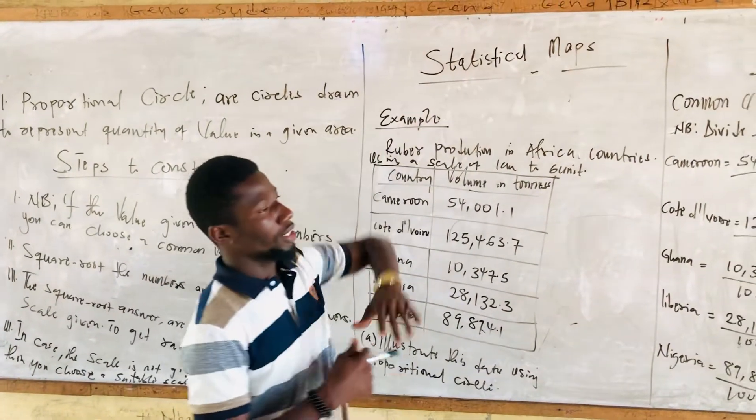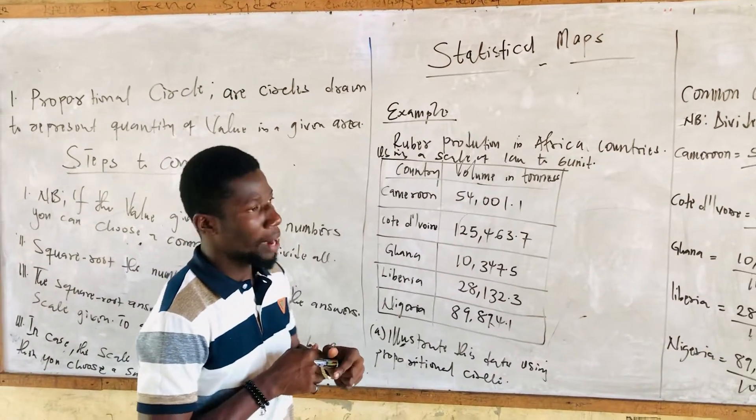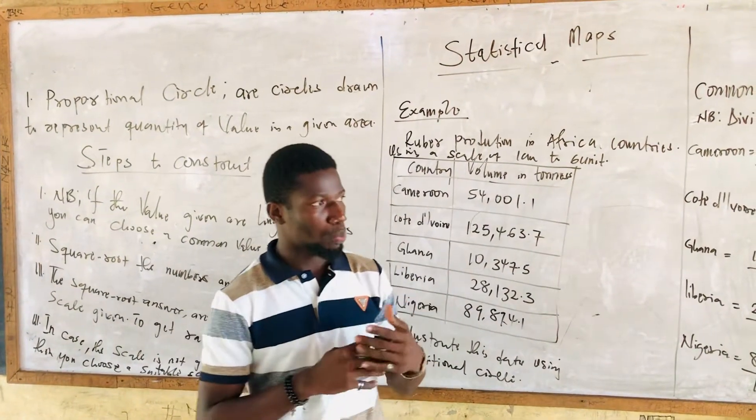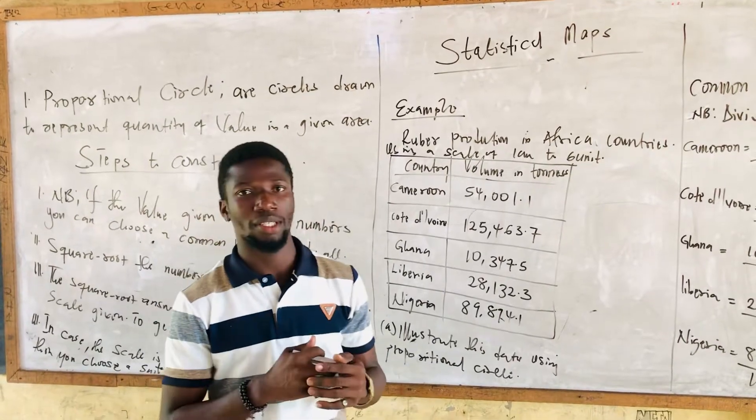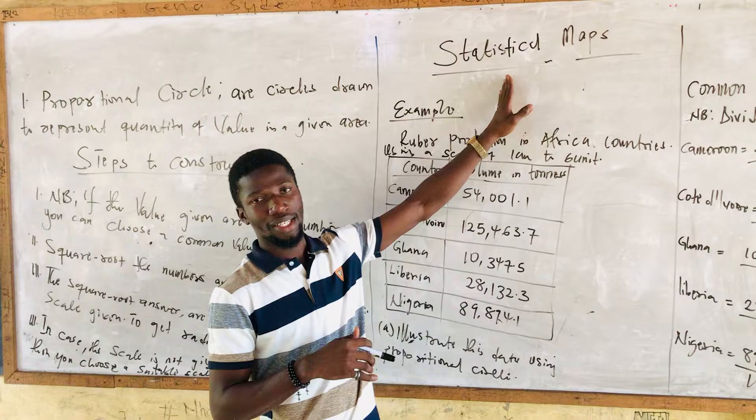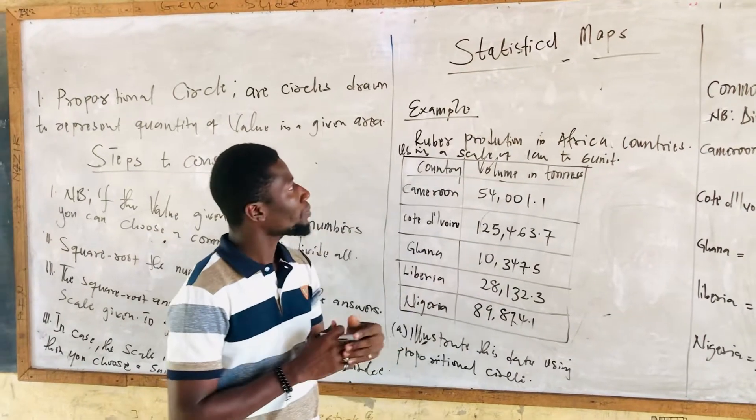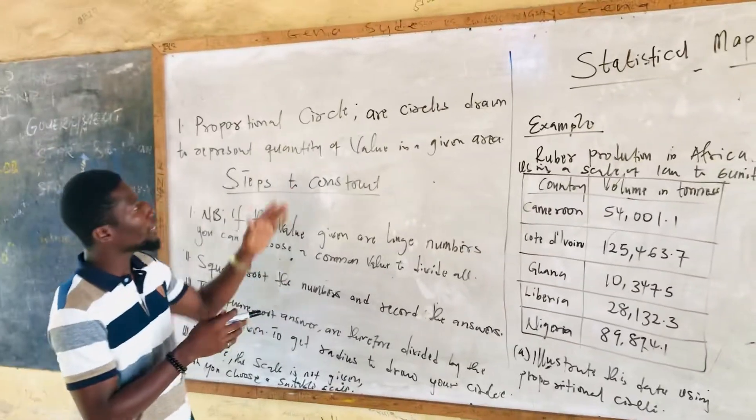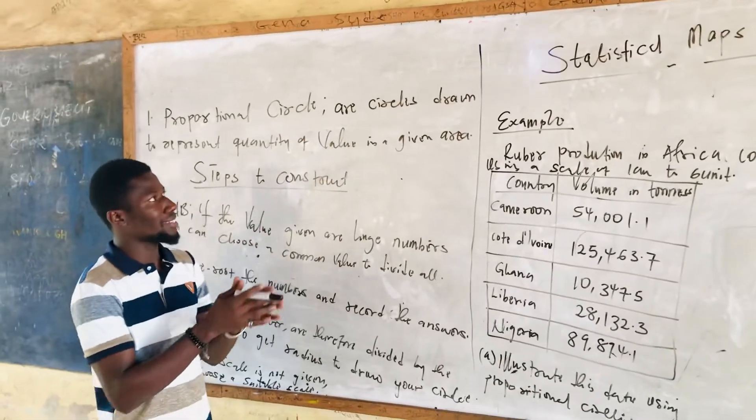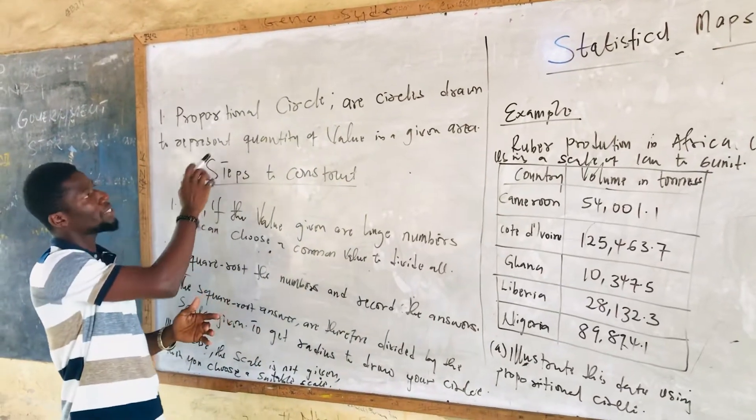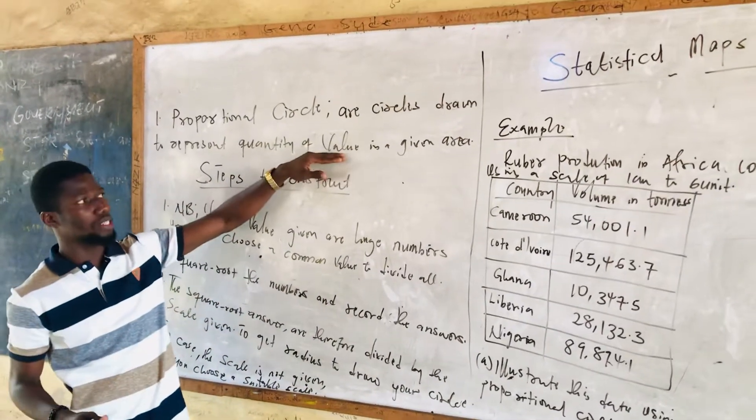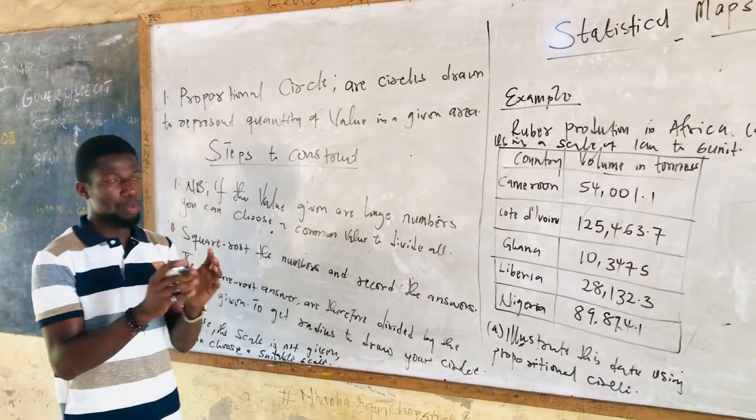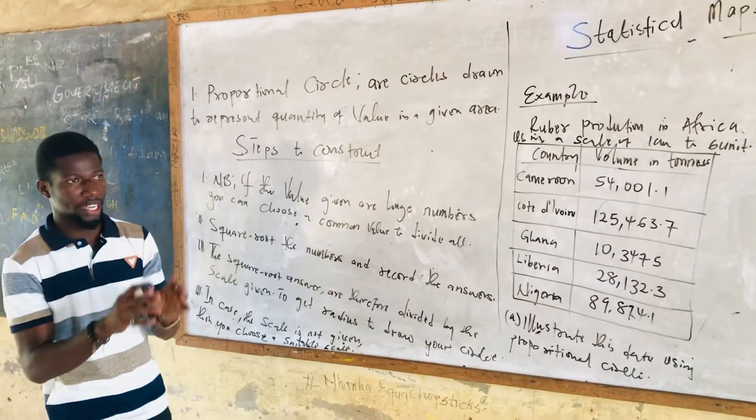Today we are going to start statistical maps. Under statistical maps we have dot maps, proportional maps. We have a lot of topics under proportional statistical maps, but today our focus will be on statistical maps. When you say statistical maps, what does it mean? Statistical maps are circles drawn to represent quantities of values in a given area.